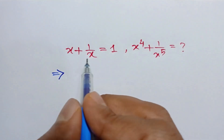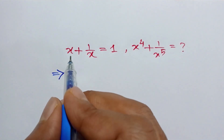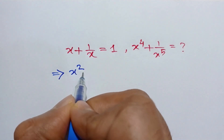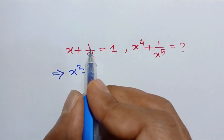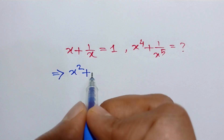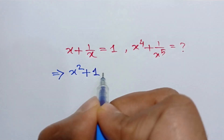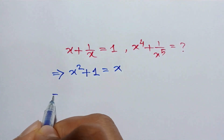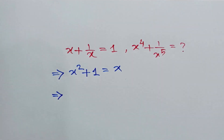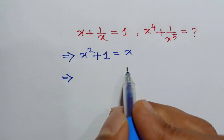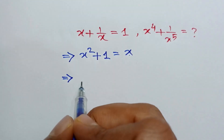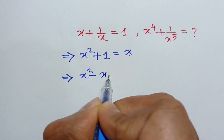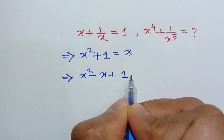If we multiply both sides by x, we can write x times x equals x squared, plus 1 over x times x equals 1, equals 1 times x equals x. Or if we take this x to the left side, we can write x squared minus x plus 1.